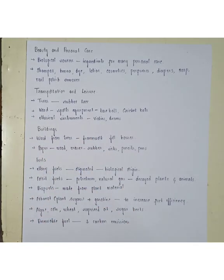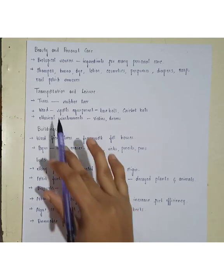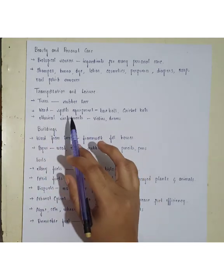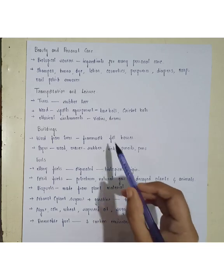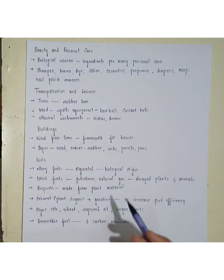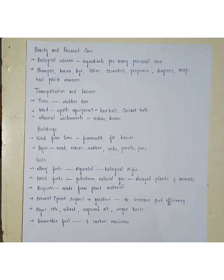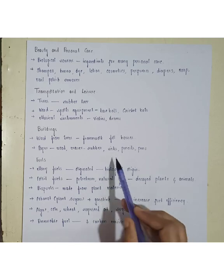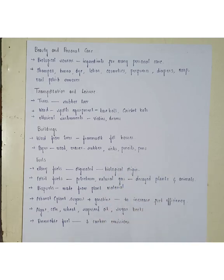In transportation and leisure, tires are made from the rubber tree, and wood from plants is used in making sports equipment such as baseball and cricket bats, and also musical instruments like violins and drums. Regarding buildings, wood from trees is used as a framework for houses. Paper, obtained from the pulp of trees, is used in making wood products. Erasers are made from rubber trees, and ink, pencils, and pens are all made from biological sources.